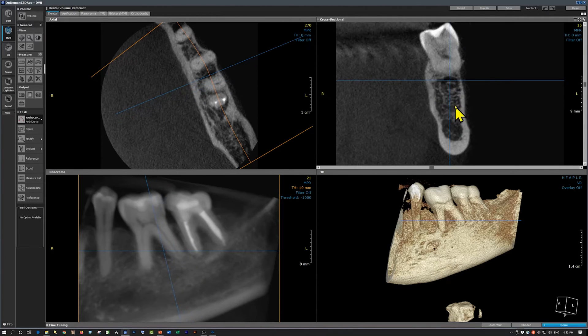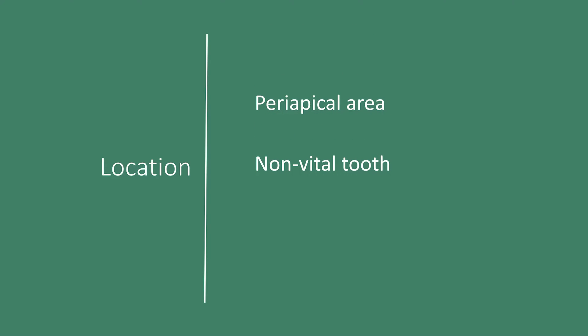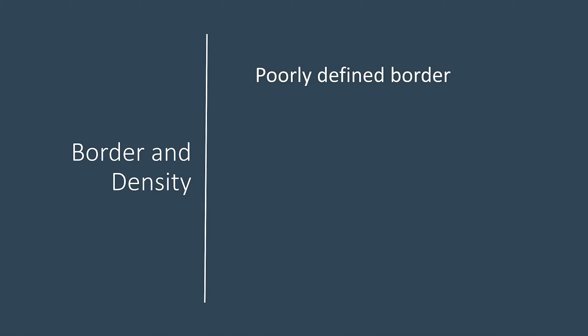These are normal looking trabecular bone. The location of sclerosing osteitis is most commonly in the periapical region. The tooth is non-vital, or it could be any other location of infection. The border and density of sclerosing osteitis will also provide critical clues for the diagnosis. In case of sclerosing osteitis, the border is poorly defined — you will have difficulty describing the exact location of the sclerosing osteitis.